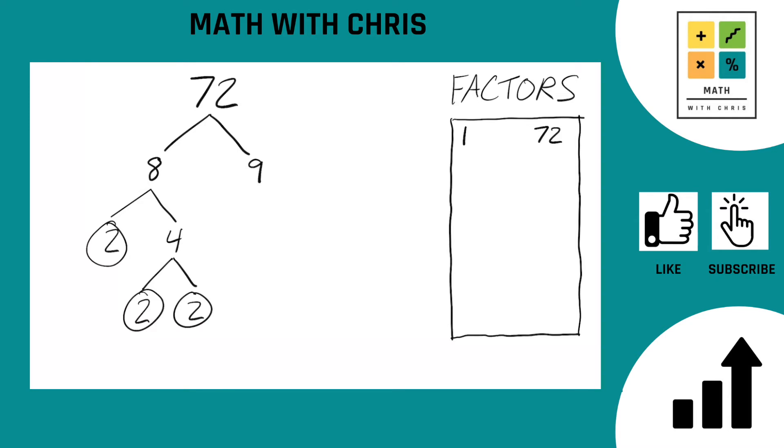Now let's go over to the right side, take a look at the nine. Nine we can break down into three times three, that's our only option. And threes are prime numbers, so threes are done. Circle both of the threes.